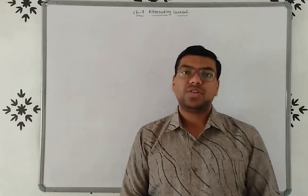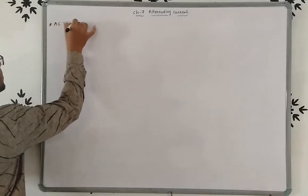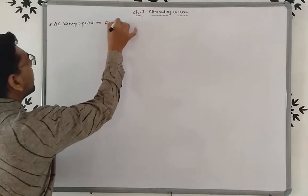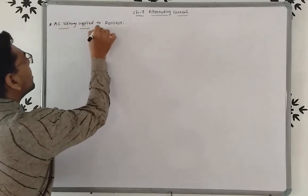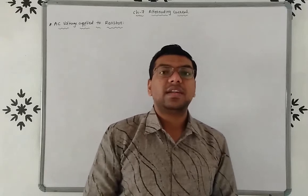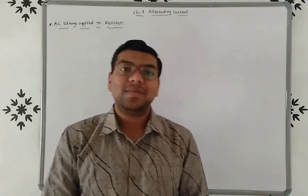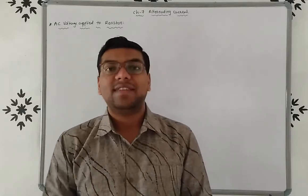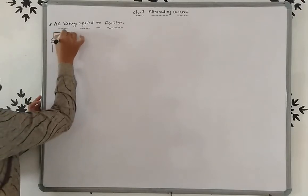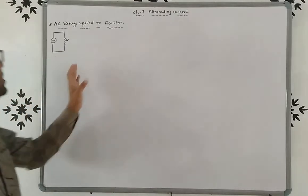Now friends, we discuss AC voltage applied to a resistor. The question will be like: explain AC voltage applied to resistor. In this theory, we derive the equation of current, then power, then RMS value of voltage and current, and then average power. So first of all, here we connect an AC source to a resistor, as shown in the figure.